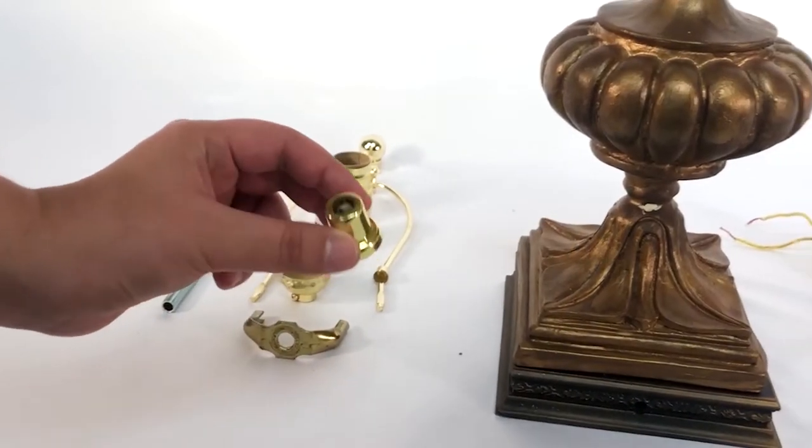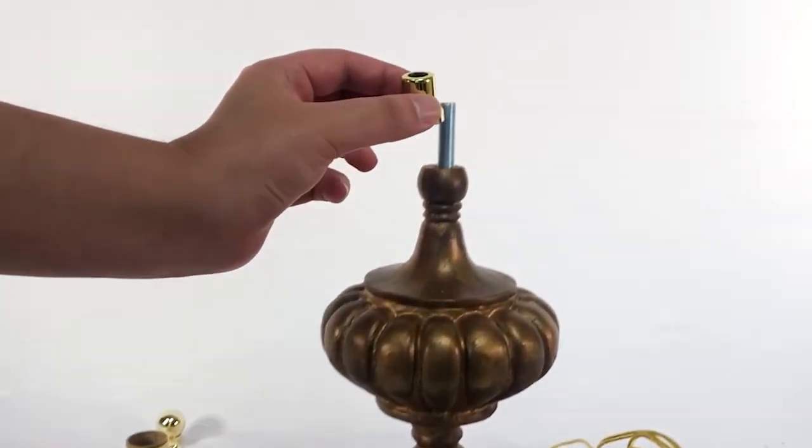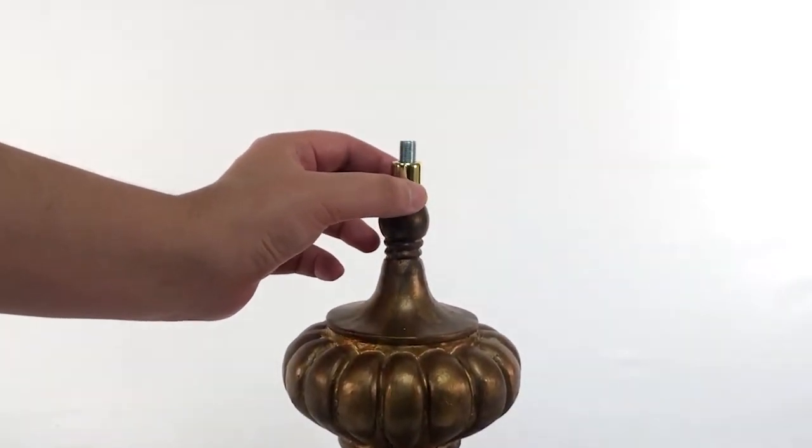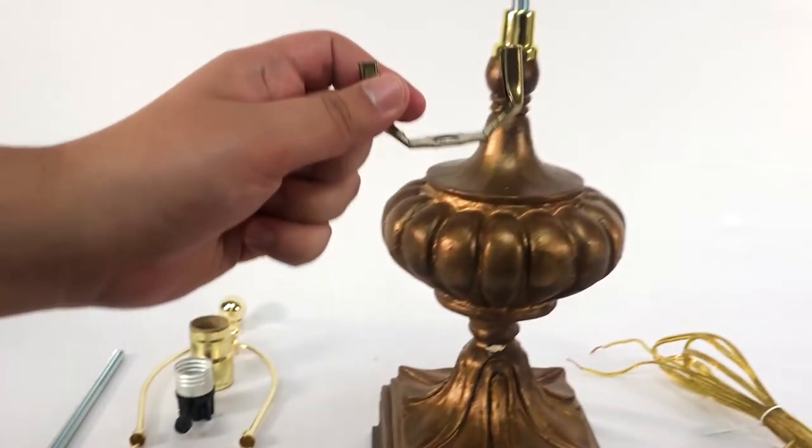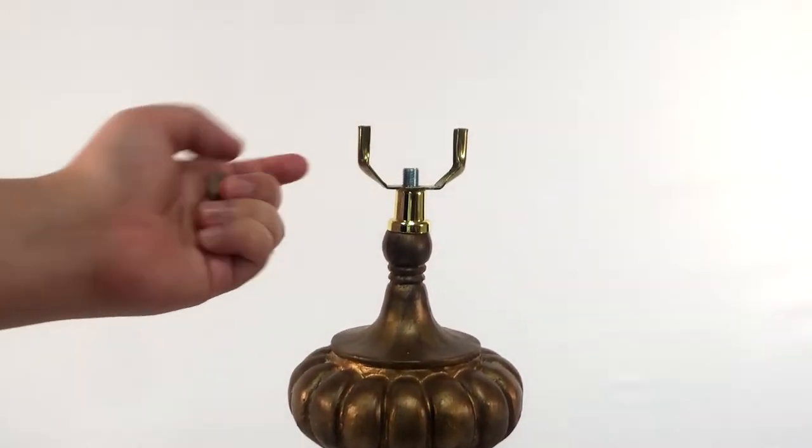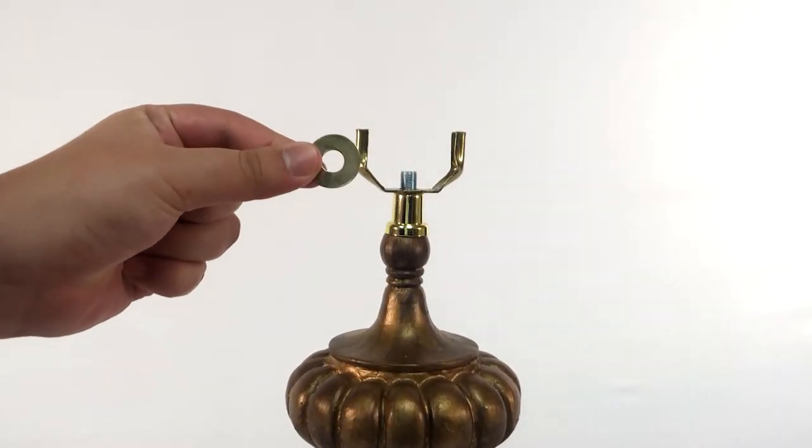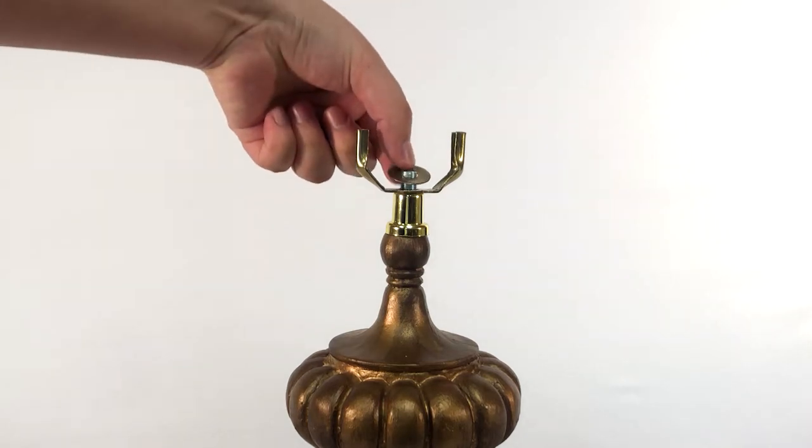Slide the neck piece into place, ensuring that the pipe still extends about half an inch above the neck. Slide the harp holder onto the pipe, then add a washer, lock washer, and lock nut to secure the pipe into place.